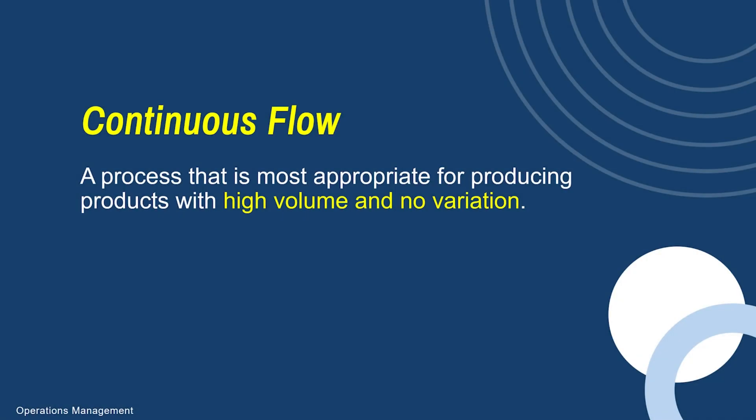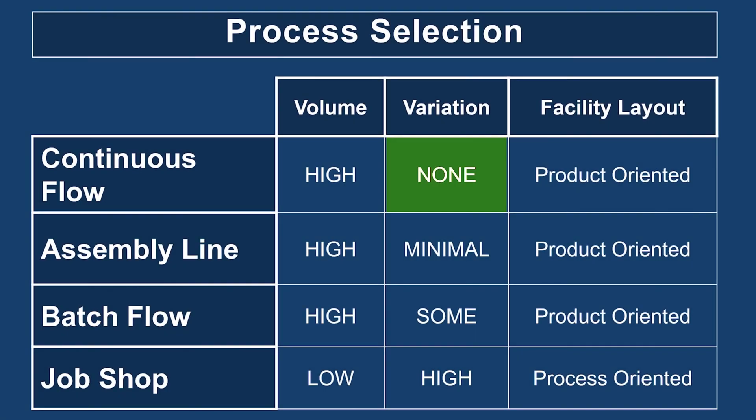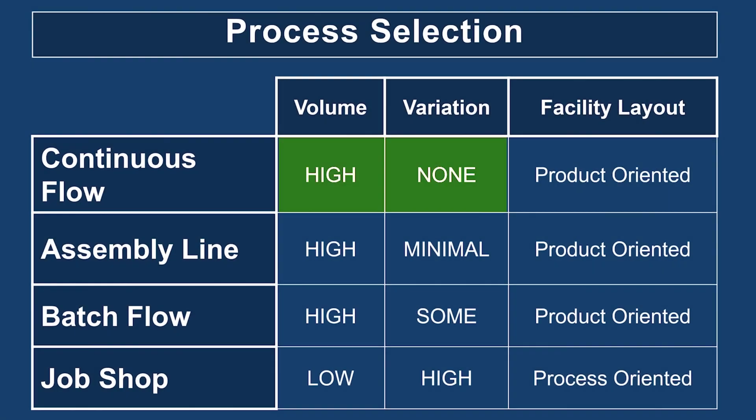First, we have what we call continuous flow. In most instances of continuous flow, there is no product variation — you're producing the exact same product over and over again at high volume. So if you have a product and you're producing a high volume of it and it's the exact same product, you want to use a continuous flow process selection. The reason being is that you're not going to change anything.